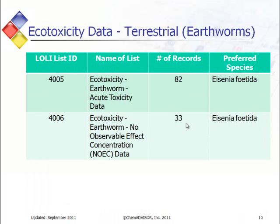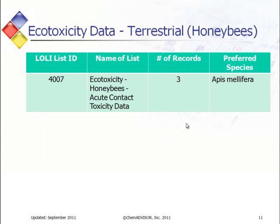This table shows the earthworm toxicity ecotoxicity list within Lawley — acute toxicity data and no observable effect concentration, otherwise known as NOEC data. There is only one preferred species used for that. The last table shows the honeybee list, for acute contact toxicity data, and again only one species is identified for use in this list.